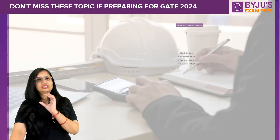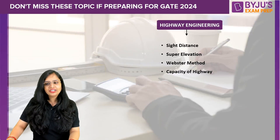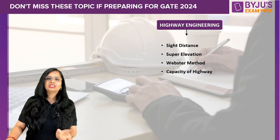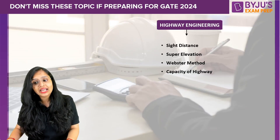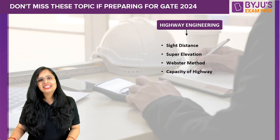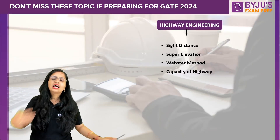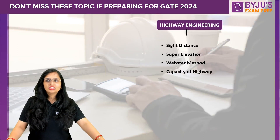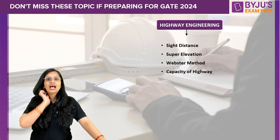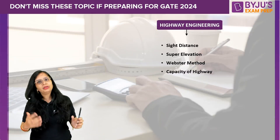For Highway Engineering, study sight distance, super elevation, the Webster method — which is a repeated question pattern — and capacity of highway. Study these topics thoroughly. I want you to study the entire syllabus, but since many students ask about the most important topics, I'm highlighting these so you build confidence first.